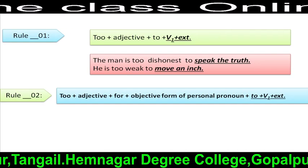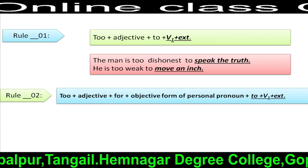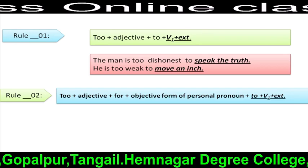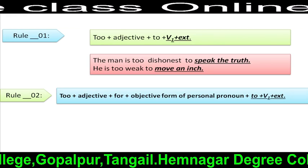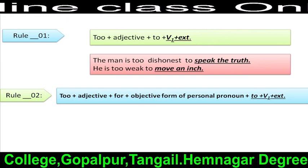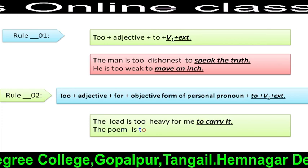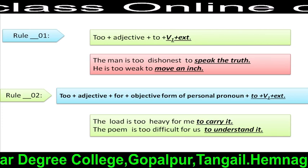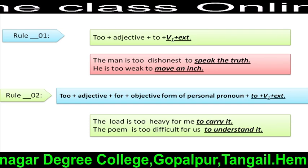Rule 2: Too + adjective + for + objective form of personal pronoun + to + V1 + extension. That means you have to complete the sentence following this structure. For example: 'The load is too heavy for me to carry it.' 'The frame is too difficult for us to understand it.'